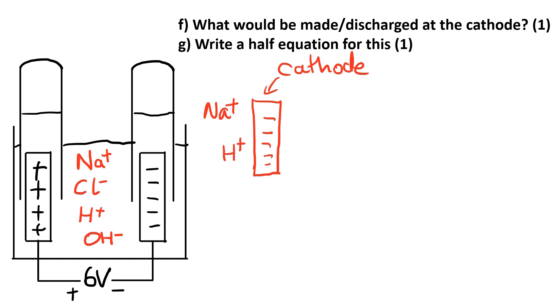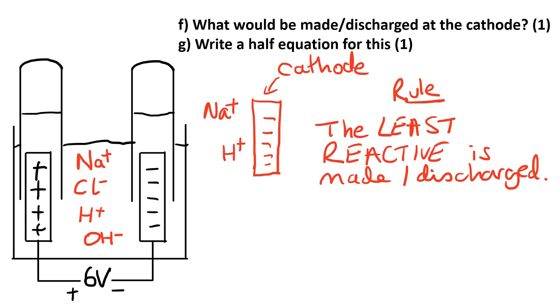The rule for this side is that the least reactive is made or discharged, so you need to know your reactivity series. If you need a reminder about the reactivity series I'll put a link up here. Once you do know your reactivity series, you know that hydrogen is less reactive than sodium, so in this case hydrogen is made. We can see on the diagram the hydrogen will collect in the upturned test tube.